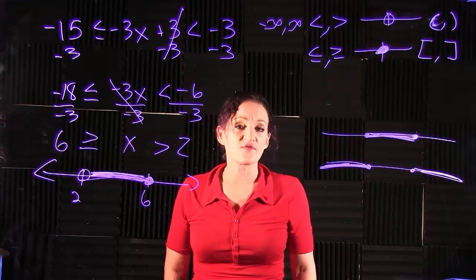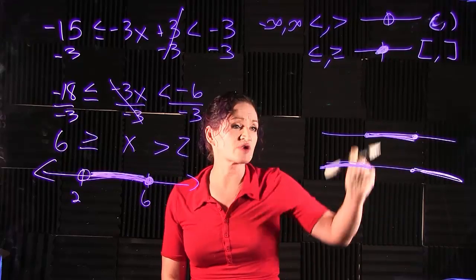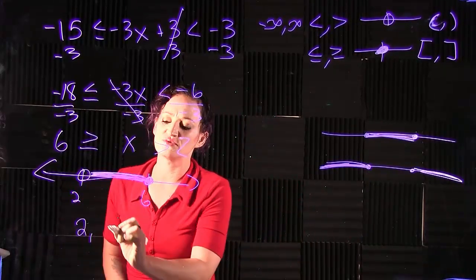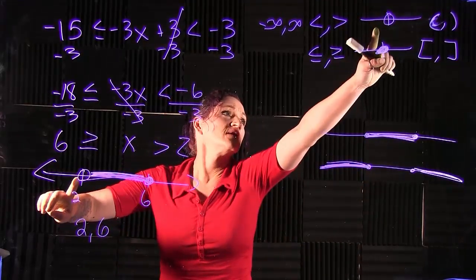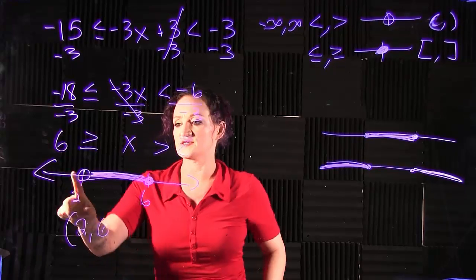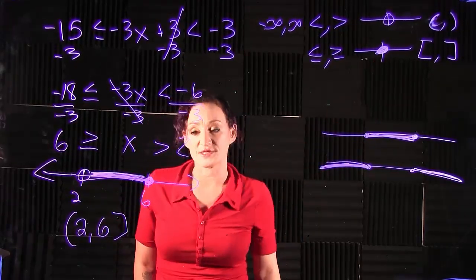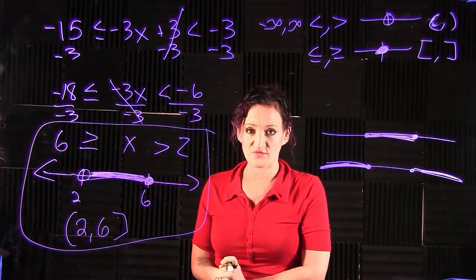In order to do interval notation, remember interval notation is your leftmost number, your rightmost number, surrounded by parentheses and or brackets. On the left we have a 2, on the right we have a 6. Open dot on the left means we're going to use a parentheses on the left. Solid dot on the right means we have a bracket on the right. All three pieces of this are our solution for this problem.